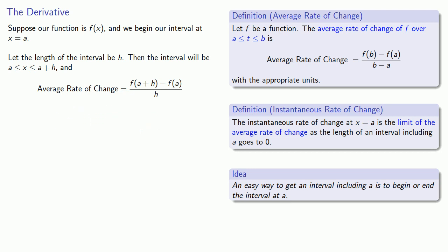Now our instantaneous rate of change is going to be the limit of the average rate of change as the length of an interval containing a goes to 0. So we're going to take the limit as h goes to 0 of this quantity, which is called the difference quotient.